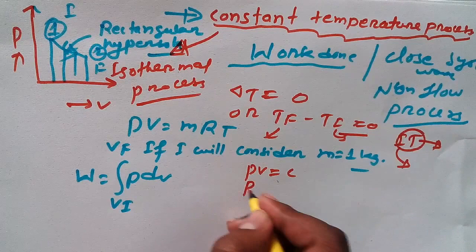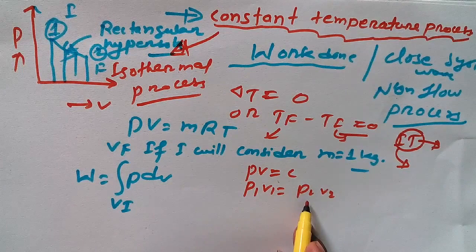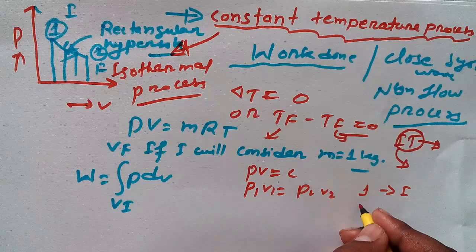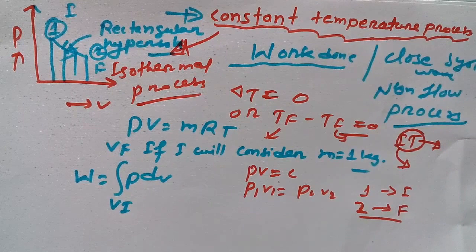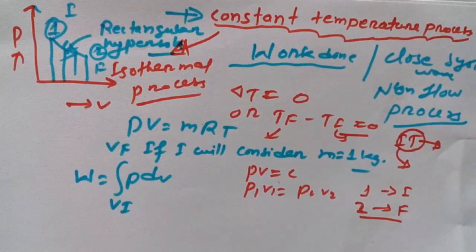So now let's do another thing. We know PV is equal to constant, so we can also say P1V1 is equal to P2V2. P initial V initial is equal to P final and V final. Also we can say because one means initial, two means final. We have to consider these things in case of thermodynamics.